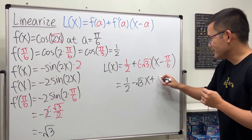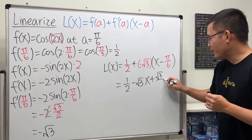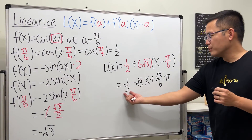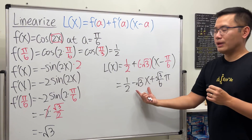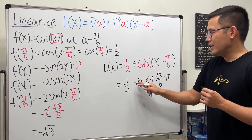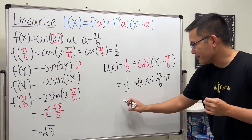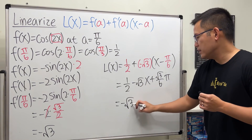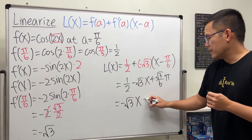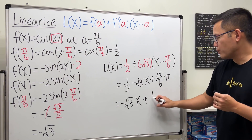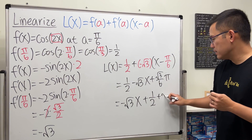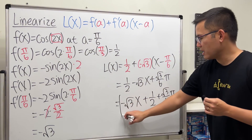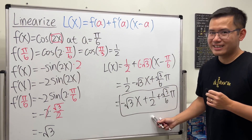So rearranging into slope-intercept form y equals mx plus b: the slope is negative square root of 3, so the final answer is L of x equals negative square root of 3 times x, plus 1/2 plus square root of 3 pi over 6. Pi is just a number, so this is our complete linearization.